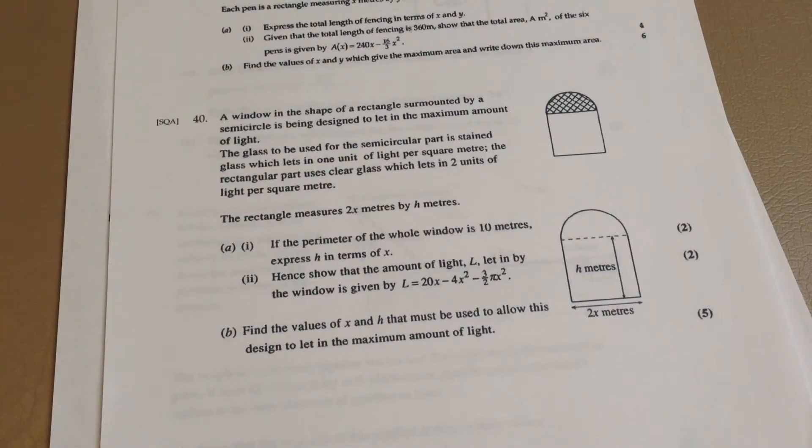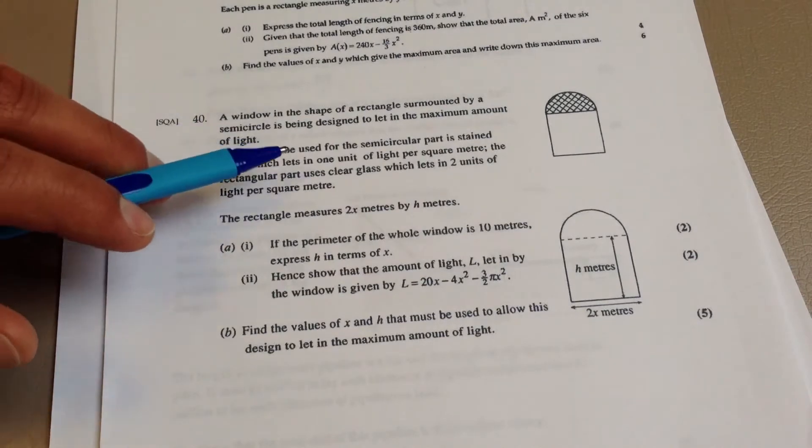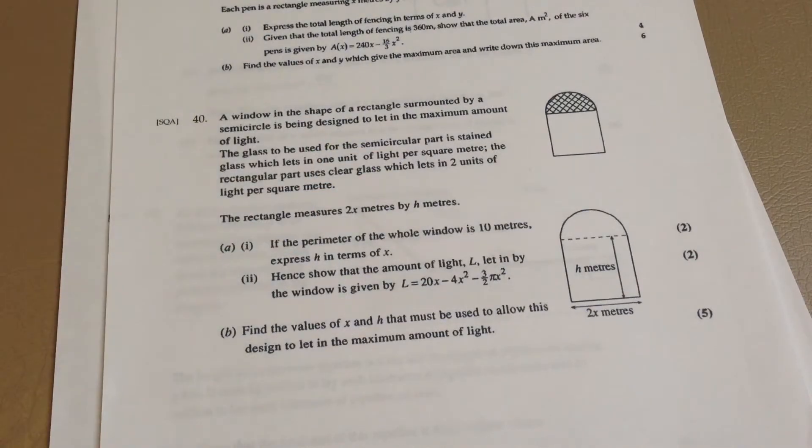A window in the shape of a rectangle surmounted by a semi-circle has been designed to let in the maximum amount of light. Now the glass to be used for the semi-circular part is stained glass which lets in one unit of light per square metre. That's quite important actually. A lot of people skip straight past that and don't even take it in. The rectangular part uses clear glass which lets in two units of light per square metre.